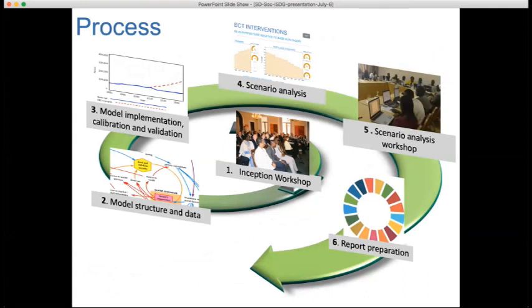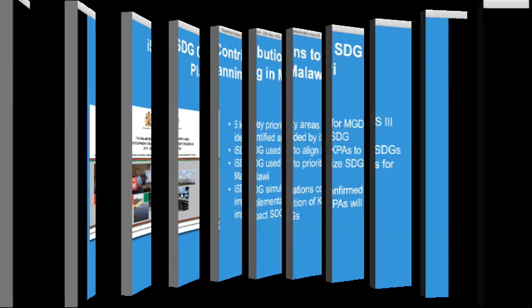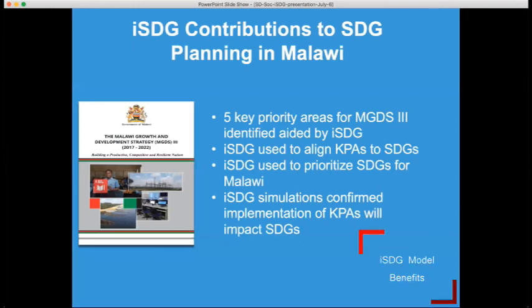Initially a modeling team is formed, and throughout this spiral process the team undergoes training in systems thinking and system dynamics as well as the ISDG and its user interface. The Malawi government identified five key areas for their national plan that was facilitated by using the ISDG. The ISDG also helped align the key performance areas to SDGs, helped prioritize SDGs for Malawi, and the simulations confirmed that implementation of the KPAs would impact the SDGs.